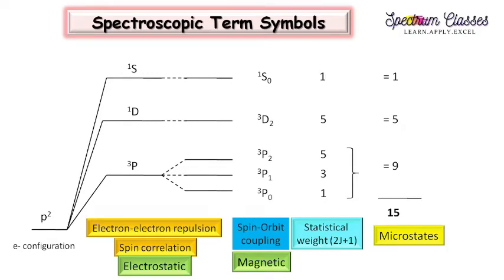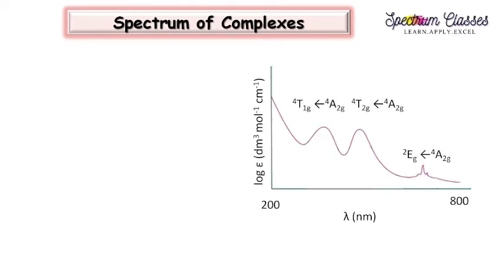Hello everyone, welcome back to Spectrum Classes. Today in this video I am going to discuss about spectroscopic term symbols. Here I have drawn a chart for a given configuration showing the term symbols and the number of microstates. These important points I am going to discuss in this video. Before starting, I'll ask you: why are spectroscopic term symbols important? The answer is that we have this type of spectrum for the complex and we can predict the different types of peaks in this spectrum.